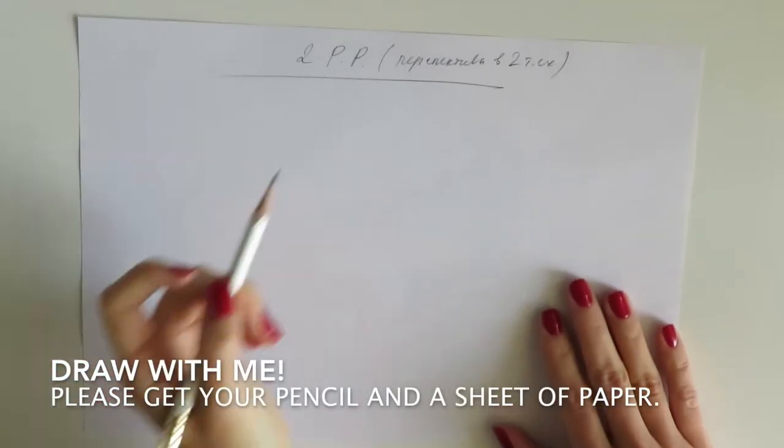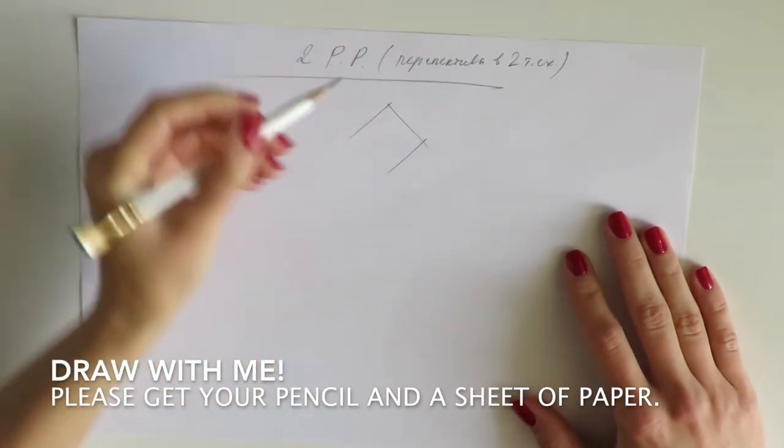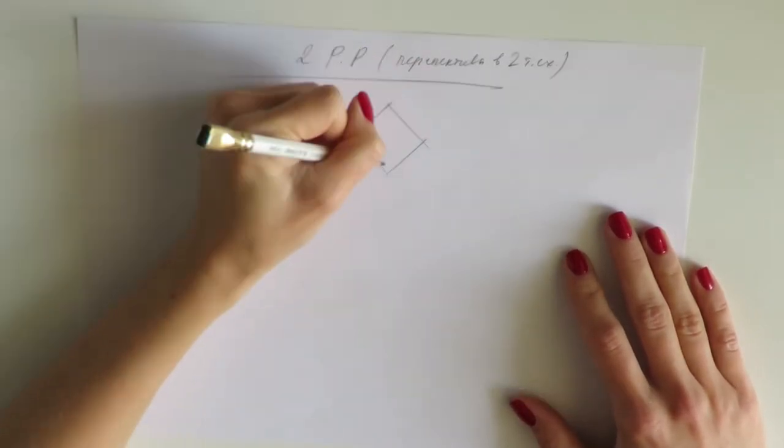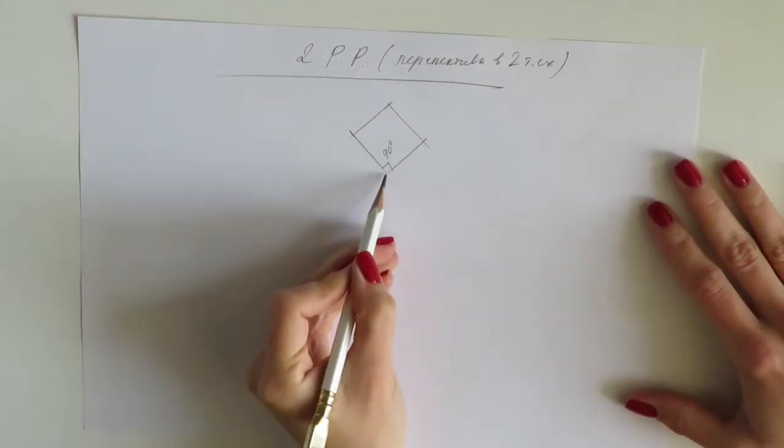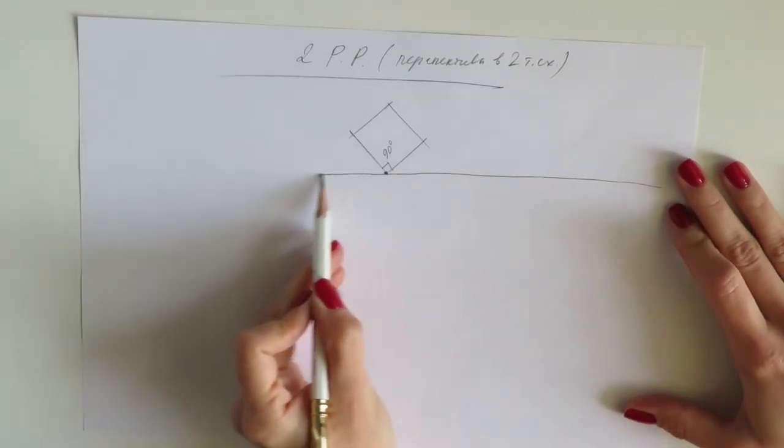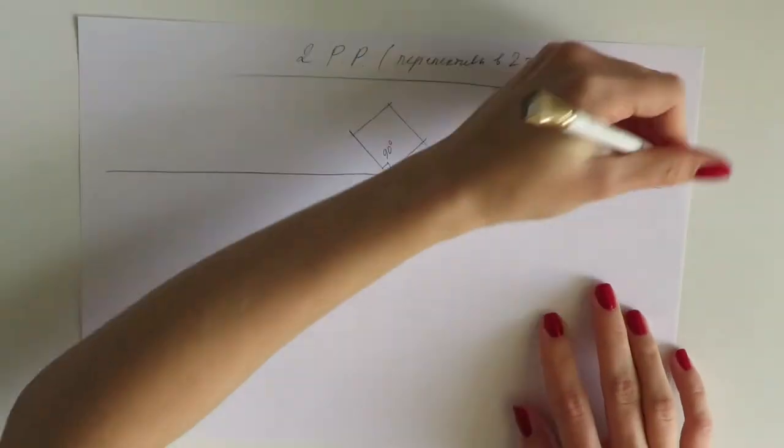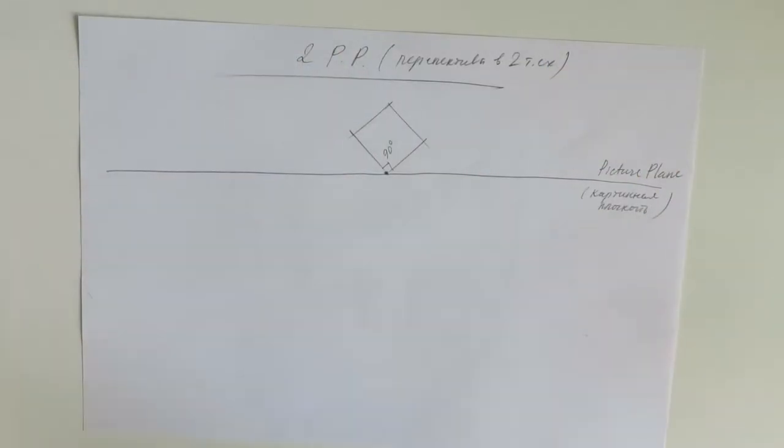So draw with me now. Please get your pencil and a sheet of paper. Well, the first step is to take your plan and arrange it on a line that's gonna be your picture plane. So let's assume that we have some kind of a floor plan.